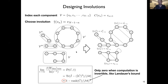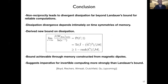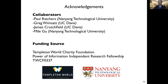In summary: non-reciprocity leads to divergent dissipation far beyond Landauer's bound for reliable computations, and the dissipation divergence depends intimately on the time symmetries of memory. We derived a lower bound in terms of the rank of the computation matrix and showed it is achievable through memory constructed from magnetic dipoles. This arrives at the same design principles as Landauer's bound but more strongly, because the cost of non-invertibility is much higher for time-symmetrically controlled systems like biochemical computers or digital computers.